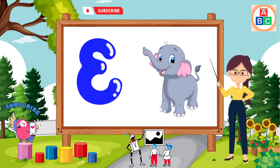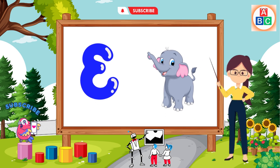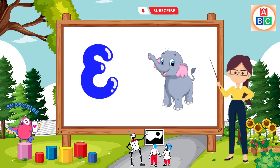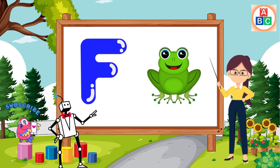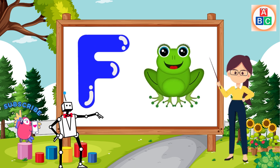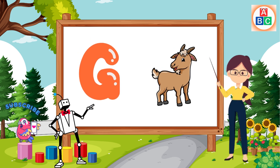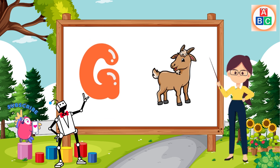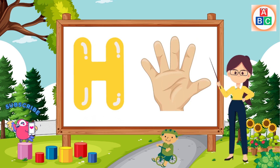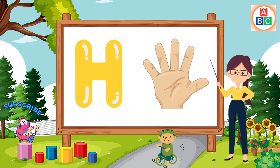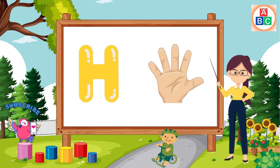E is for elephant, e-e-elephant. F is for frog, f-f-frog. G is for goat, g-g-goat. H is for hand, a-a-hand.